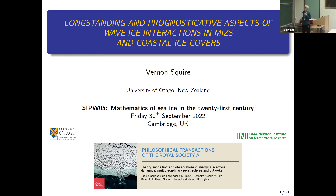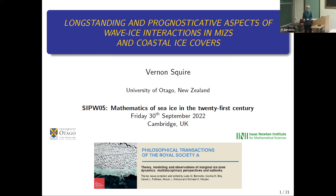I want to mention the volume Philosophical Transactions of the Royal Society, which is advertised outside with a bunch of leaflets. It has about 17 papers covering a lot of the talks given in the last couple of days — flow size distribution, wave-ice interaction, and all sorts of things. I recommend going to the Phil Trans website and having a look. I commend the editors: Luke, Cecilia, Danny, Allison, and Michael.